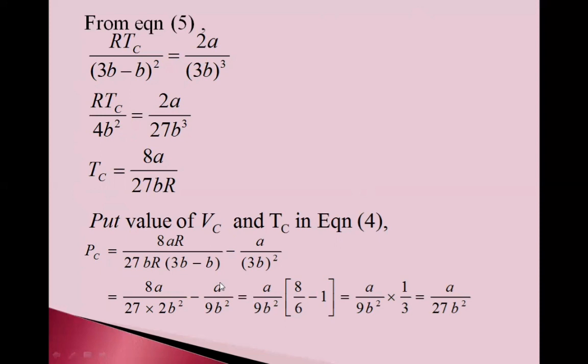Now, take a upon 9b square as common, and in bracket 8 by 6 minus 1. So, we get a upon 9b square into 1 third. So, a upon 27b square.